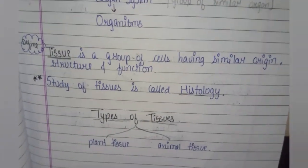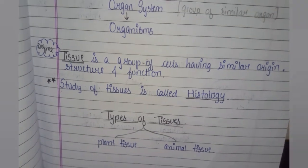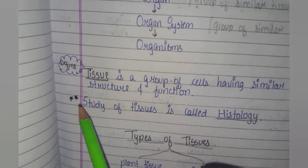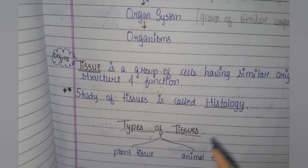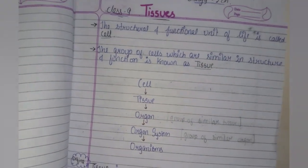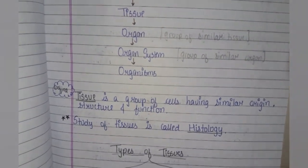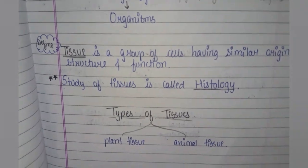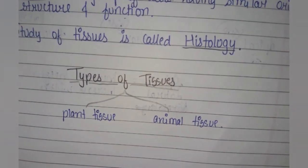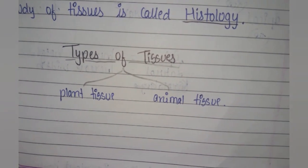The study of tissue is called histology. This is for your general knowledge but it can also come in your examination, so I've marked it with two stars — this line is important. There are two types of tissues: first is plant tissue, and second is animal tissue.